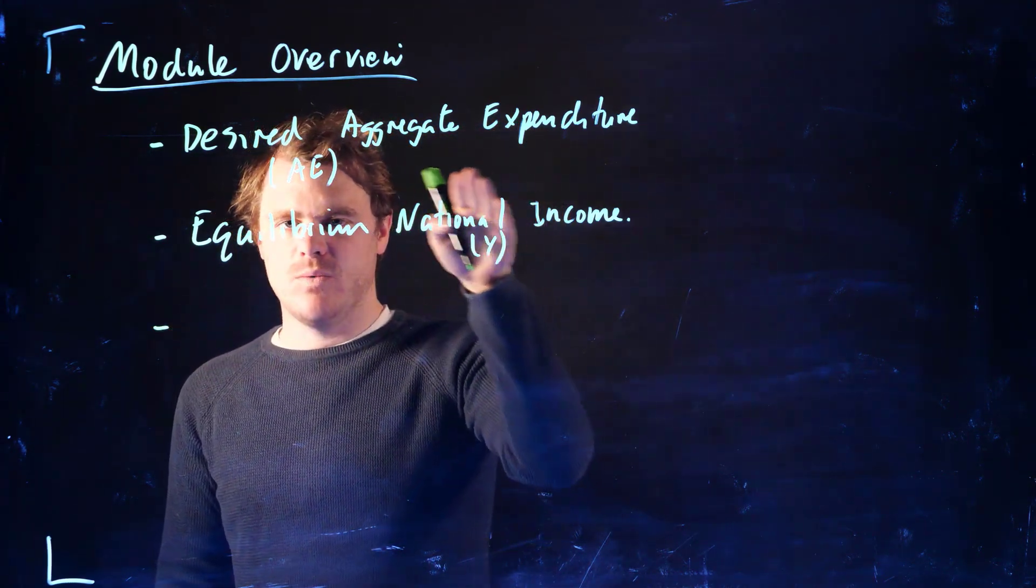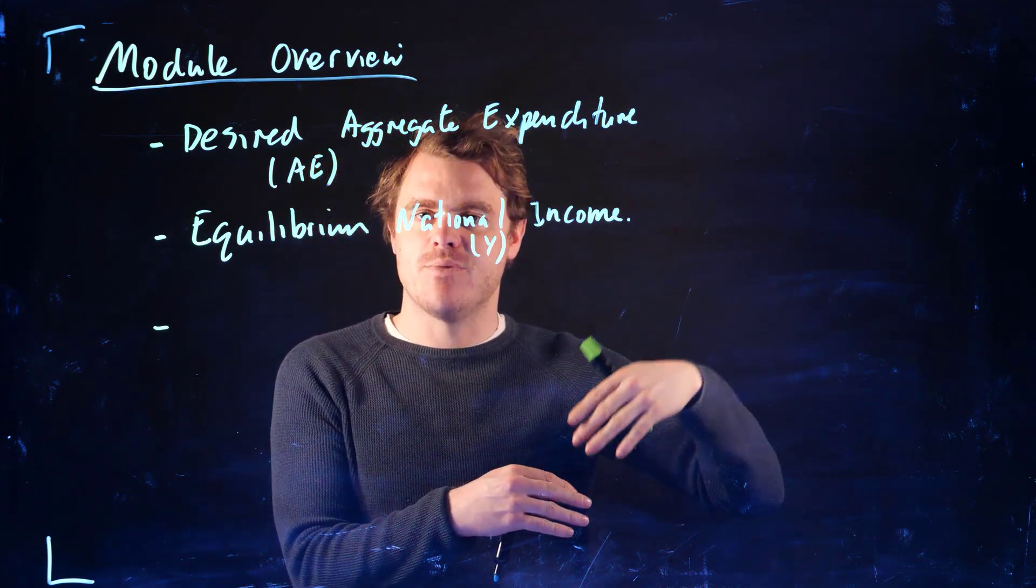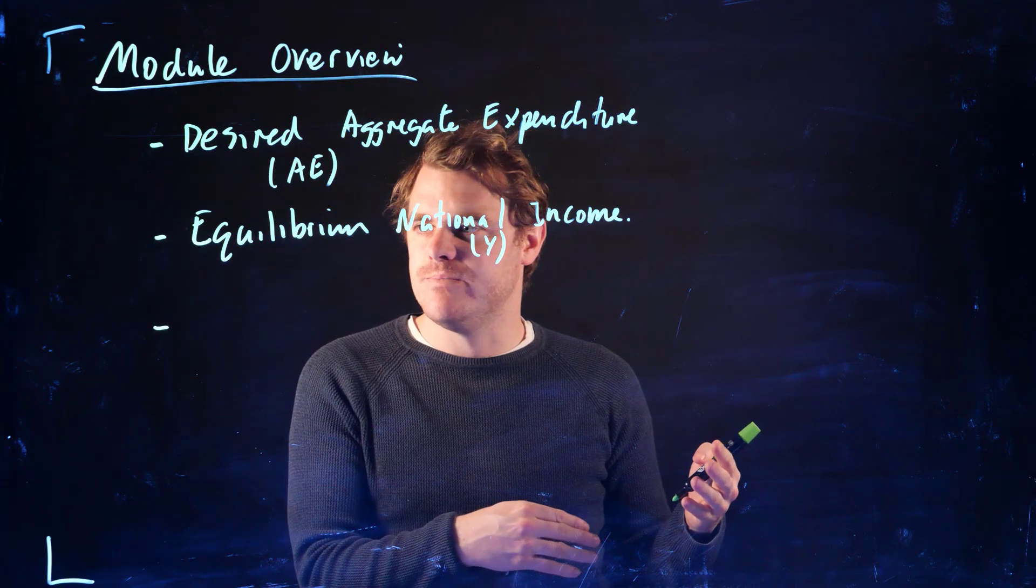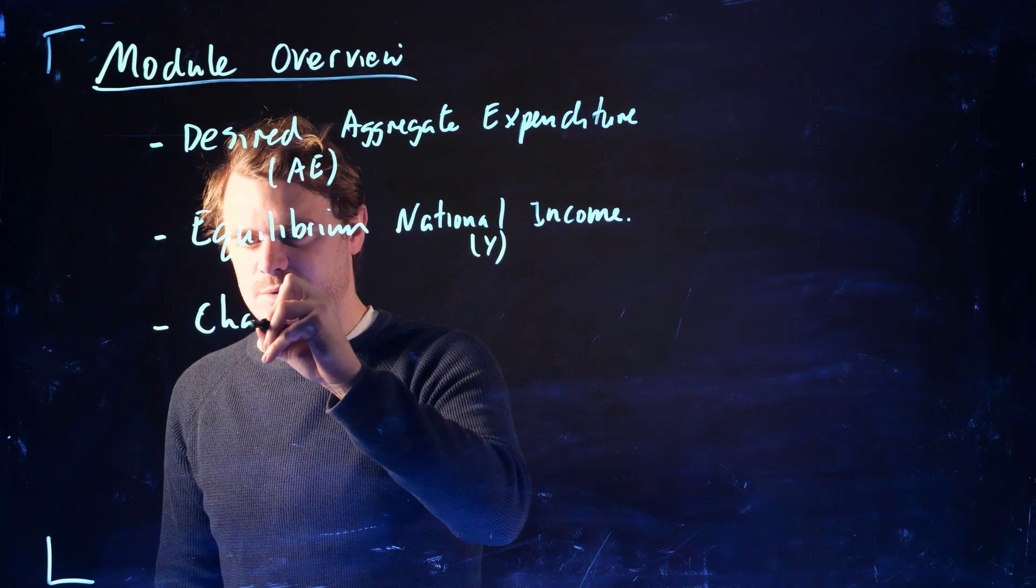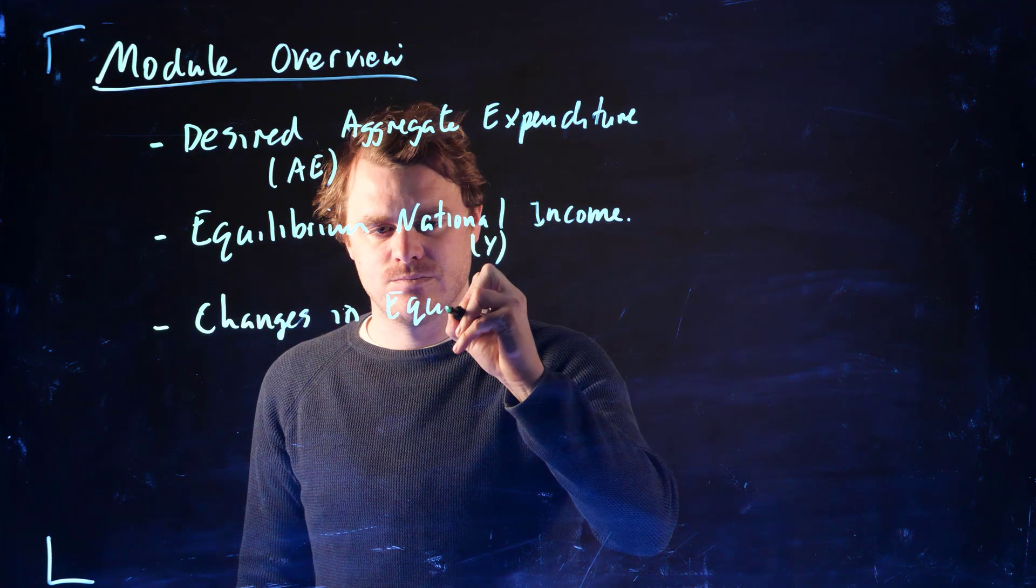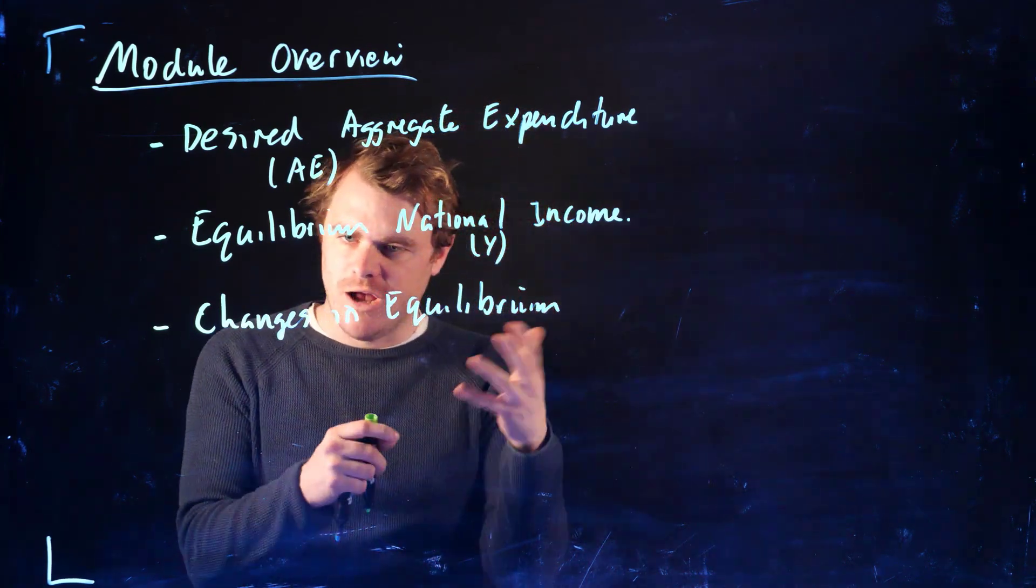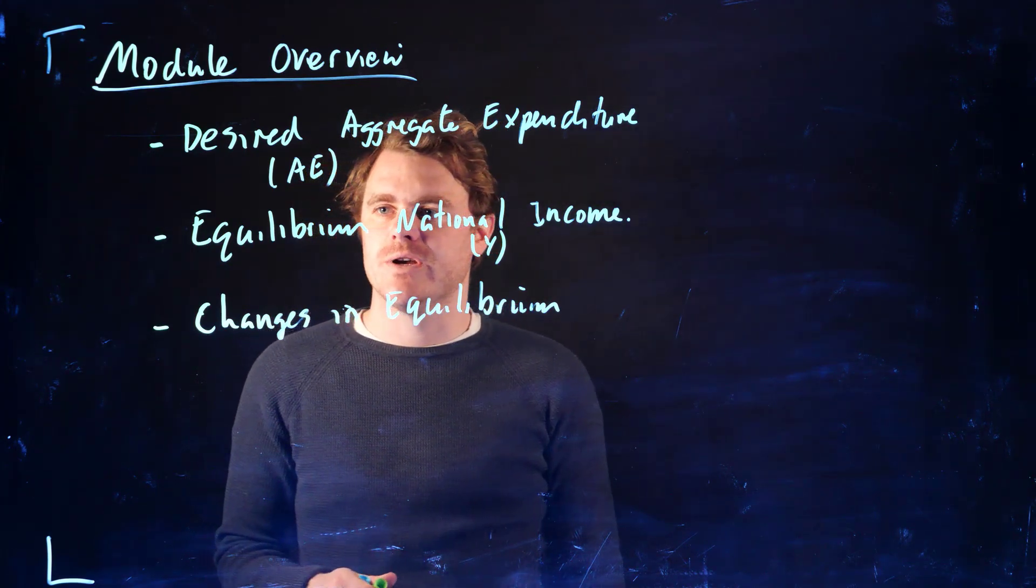Finally, we're going to talk about once we're at equilibrium, how different factors might shift us temporarily or permanently away from this equilibrium. So changes in equilibrium. We'll talk about concepts like the simple multiplier when we discuss changes in equilibrium.